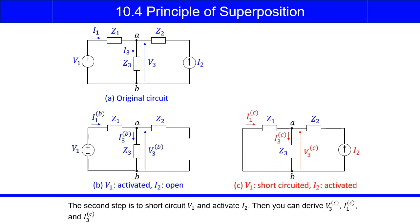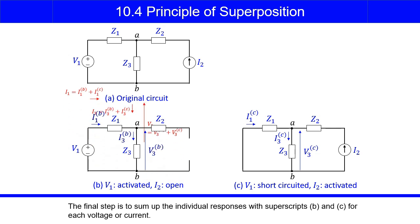The second step is to short-circuit V1 and activate I2. Then you can derive V3C, I1C, and I3C. The final step is to sum up the individual responses with superscripts B and C for each voltage or current.